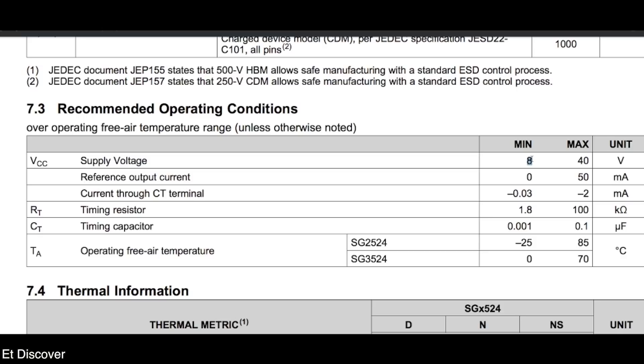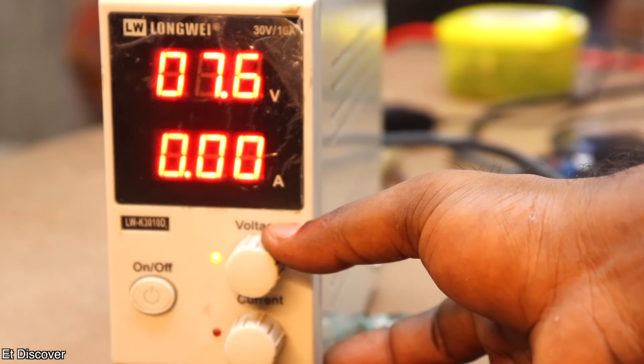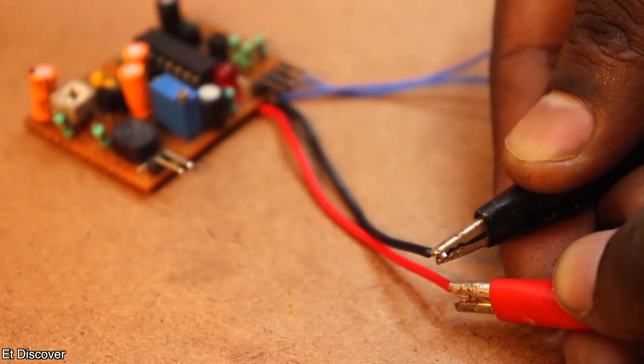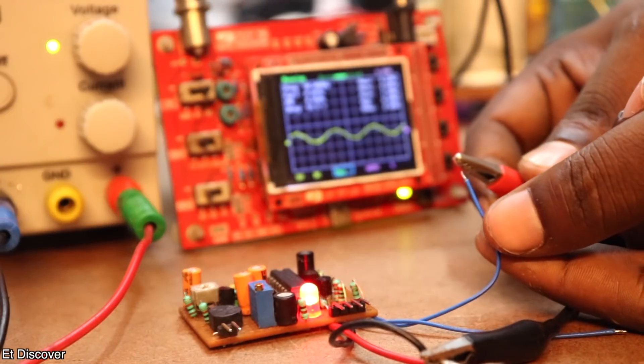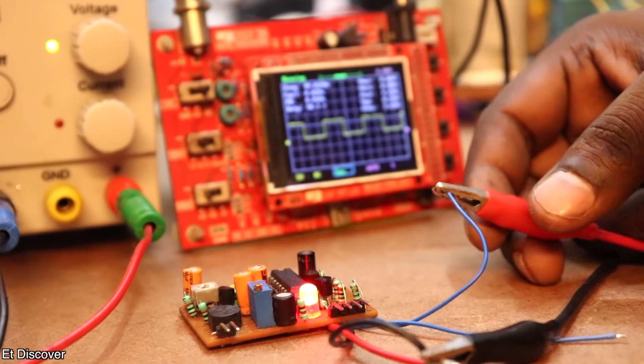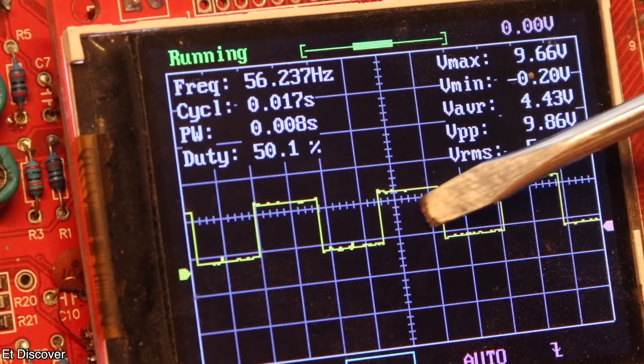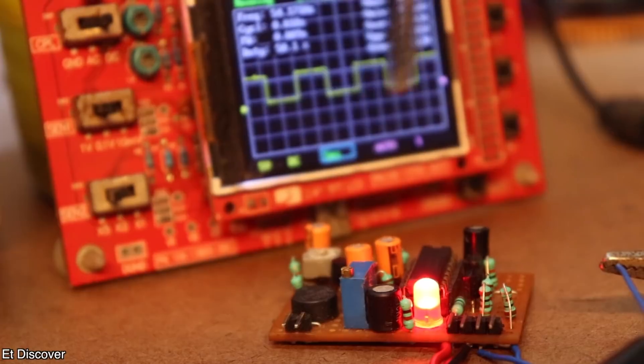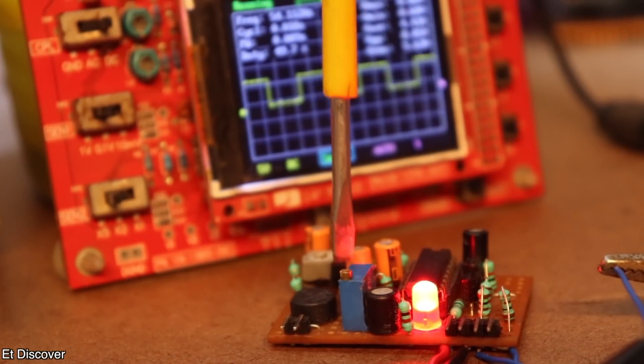Since this IC required minimum 8V, that is why I select my power supply to be 8V. And I connected the output voltage to the positive and negative of this circuit. Then I connected the input signal of my oscilloscope to the output signal of this board. And you can see, my oscilloscope is showing some square wave signal. But the frequency is around 60 Hz, which is not suitable for this inverter.